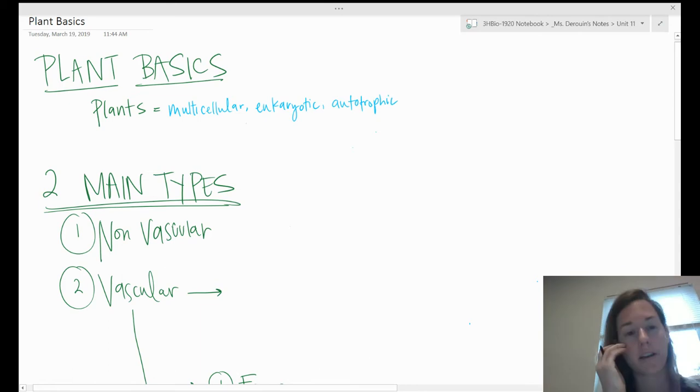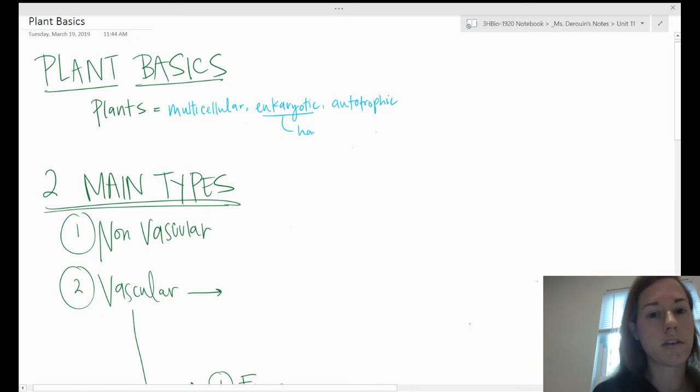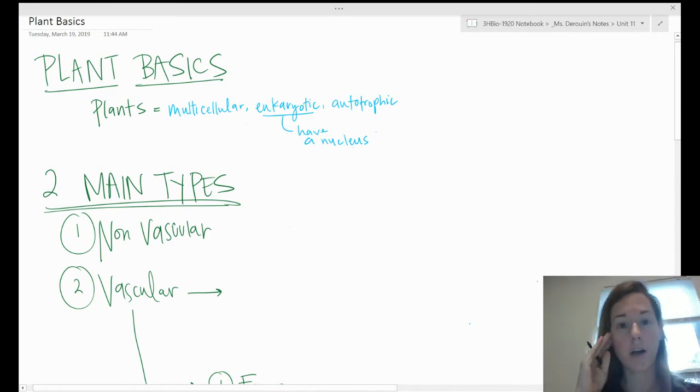I think we all know what multicellular means - it has more than one cell. Eukaryotic means that the cells of plants have a nucleus and they also will have cell walls that are made of cellulose, which we talked about in the fall. That's fiber, plant fiber that's not digestible to us.